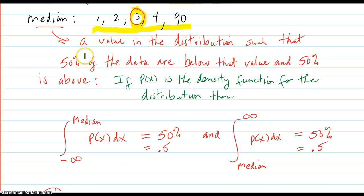So the median is a value inside the distribution somewhere, such that 50% of the data are below that value and 50% is above.